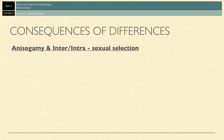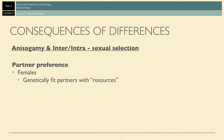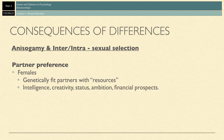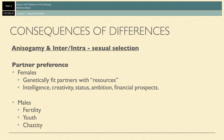Interestingly, the consequences of anisogamy and inter- and intrasexual selection mean that males and females have specific preferences in terms of what they want in a partner. Research has shown that females look for genetically fit partners with resources — resources meaning intelligence, creativity, status, ambition, financial prospects — looking for a male that can provide resources and protection to them and their offspring. Whereas males look for fertility, signs of fertility, youth, chastity, and modesty — characteristics that suggest the female could be a reproductive partner.